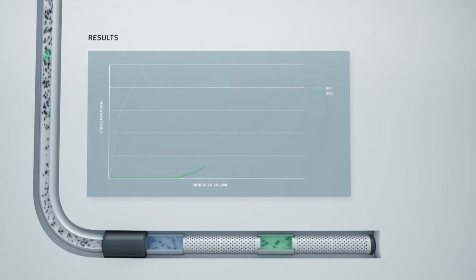Analysis of the samples provide a graph of concentration versus produced volume. The concentration of the tracer from the green location is indicated by the green line. This data indicates the oil that was surrounding the tracer carrier prior to the start-up has been produced to the surface and therefore the toe of the well is flowing.